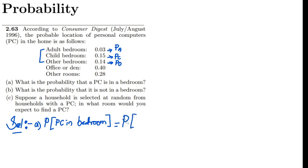What do I have to do? I have to find the probability that the PC would be in adult bedroom or in child's bedroom or in other bedroom. The formula for it will remain the same.